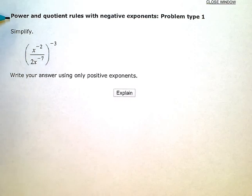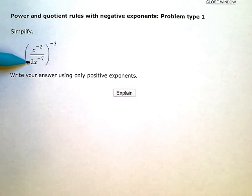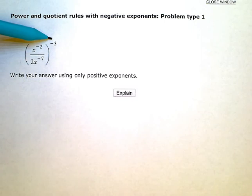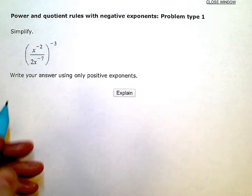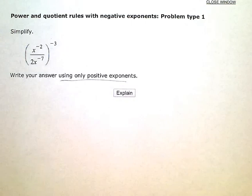Power and quotient rules with negative exponents, problem type 1. Simplify. I have x to the negative 2 divided by 2x to the negative 7th, and that entire thing is raised to the negative 3rd exponent. They want me to write my answer using only positive exponents.